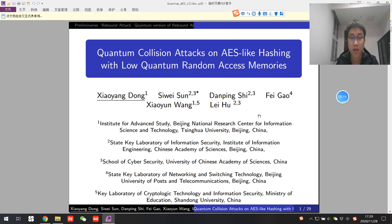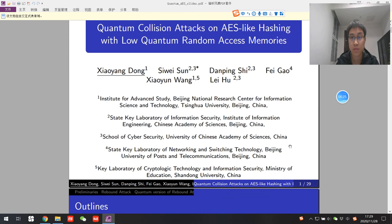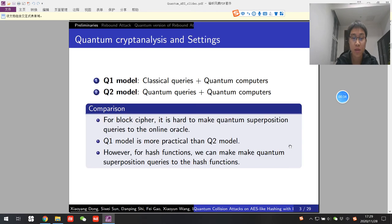This talk has three parts. First, I will give some reviews on quantum cryptanalysis and settings. Suppose we are attacking a block cipher. We have two models, Q1 model and Q2 model. In Q1 model, one collects queries in classical ways online and does the computations offline on quantum computers.